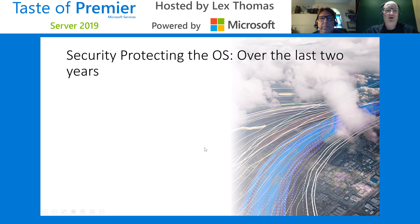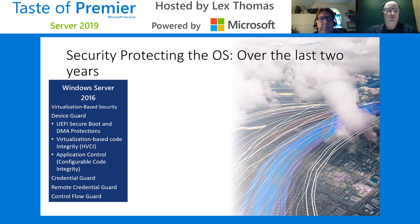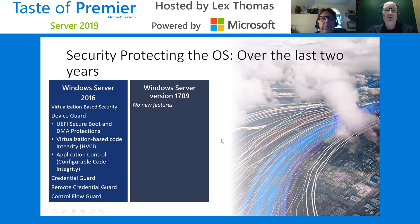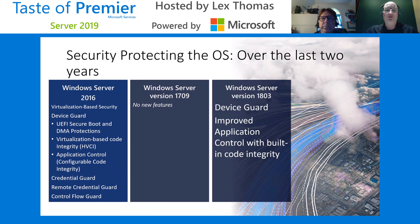When we start talking about the security pillar, we've made a lot of changes to protecting the OS. In 2016, we had virtualization-based security, things like Device Guard, UEFI, Secure Boot, and DMA protections. We started looking at virtualization code integrity and having code integrity policies to help control and secure your environment. Credential Guard was there, and we also had Remote Credential Guard, which allows you to remote into boxes without actually sending your credentials over the wire — it comes back to the box for its Kerberos ticket and doesn't send it across. There weren't really a whole lot of new security features in 1709. In 1803, we made some improvements to Device Guard, improvements with application control, and more built-in code integrity improvements.